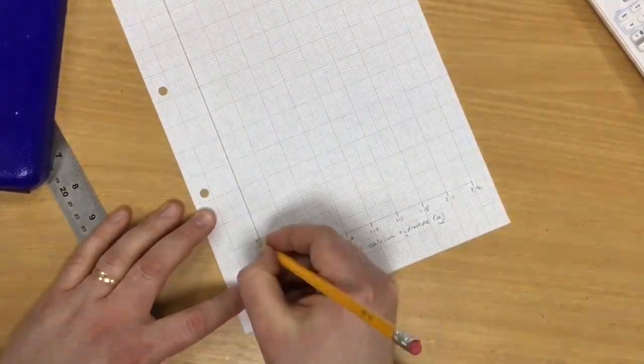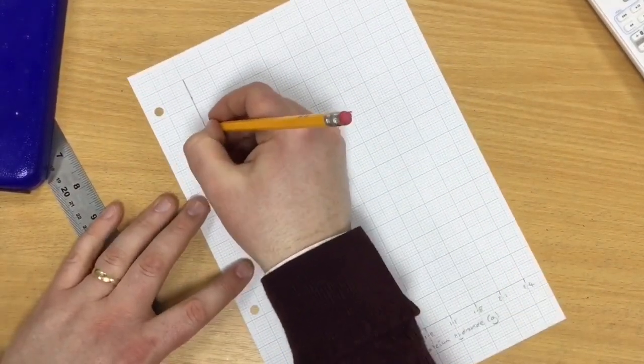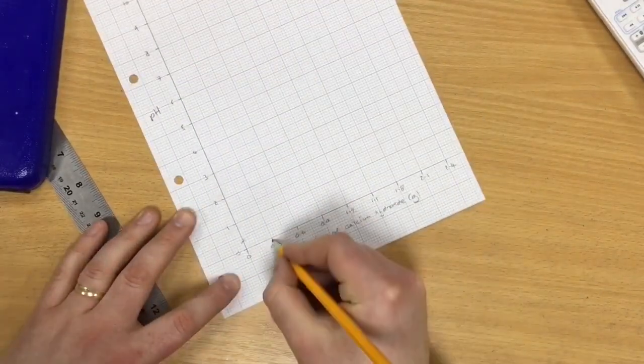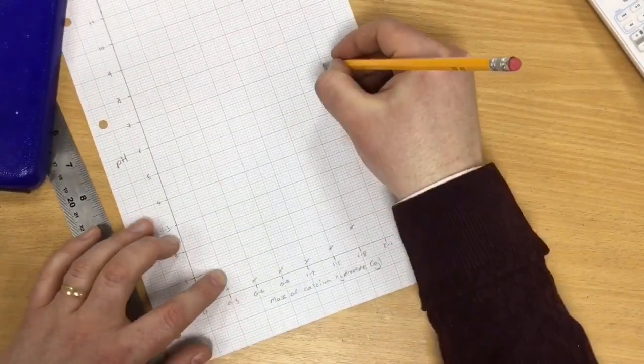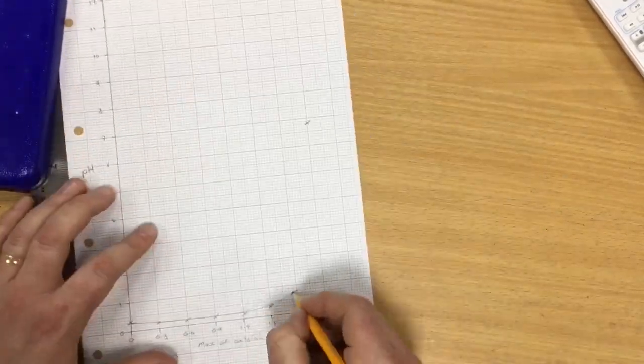The first thing we need to do is to create an axis with regular intervals. On the x-axis we have the mass of calcium hydroxide with the units of grams clearly labeled, and on the y-axis pH, again with regular intervals.